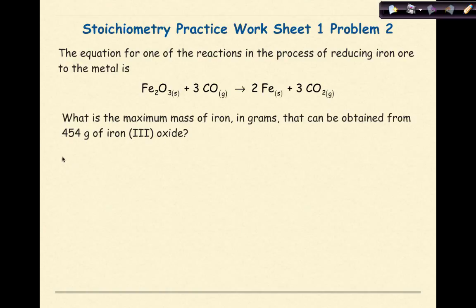Our given here is 454 grams of Fe₂O₃. Our first step in order to get to the maximum mass of iron is going to be converting Fe₂O₃ to moles.